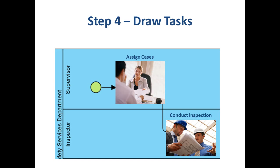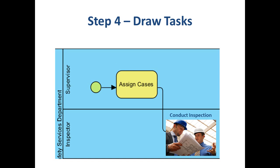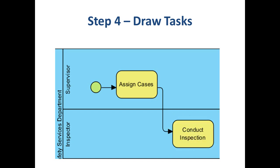In Step 4, we define things that need to be done — what we call tasks in a business process. In BPMN, we use a rounded rectangle to represent a task. In our example, the process may begin with the supervisor prioritizing outstanding cases and assigning them to inspectors. The inspector will then conduct the inspection on site. Because BPMN uses a rounded rectangle as a standard, readers can quickly identify tasks, whereas with a general flowchart, lacking a standard symbol, some people might use a square while others use a triangle.